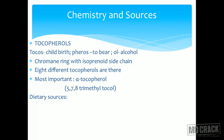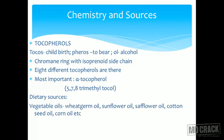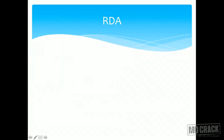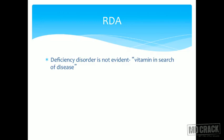What are the dietary sources for Vitamin E? Vitamin E is mainly present in vegetable oils like wheat germ oil, sunflower oil, safflower oil, cottonseed oil, corn oil, and rice bran oil. It is also present in meat, milk, butter, and eggs.